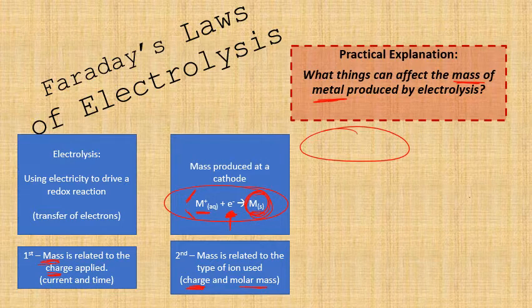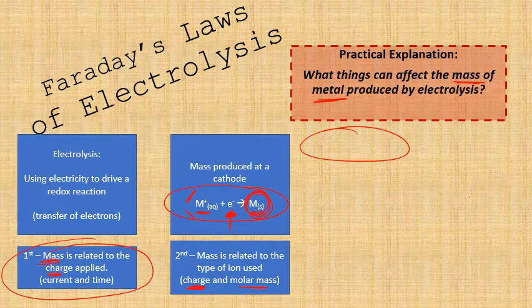So those are the two things that are going to affect the mass of metal produced: firstly, the current and time — which is the electrical charge — and secondly, the type of ion that's going to be used to create your metal.